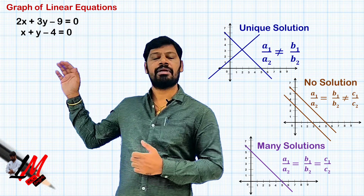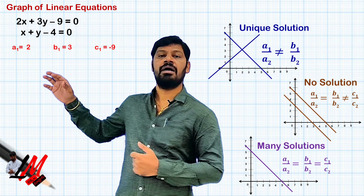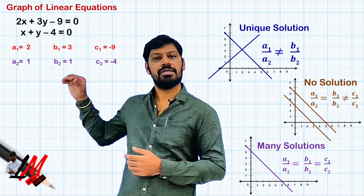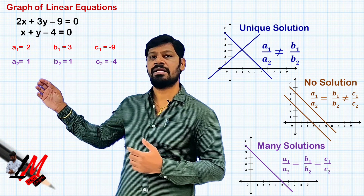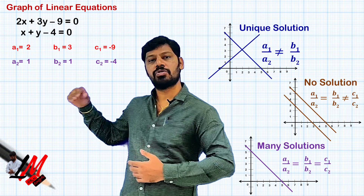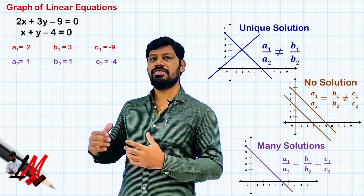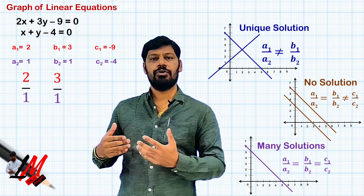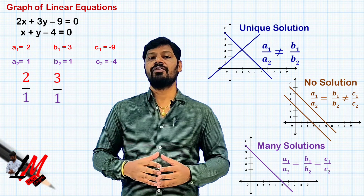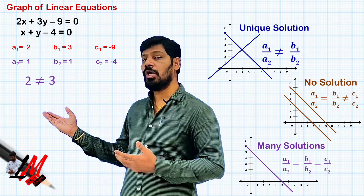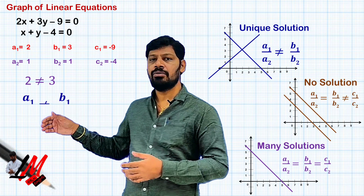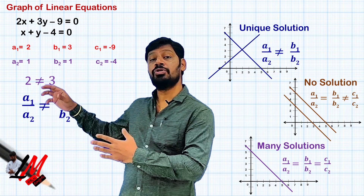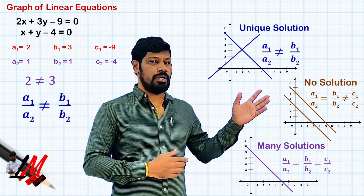Now let me identify the coefficients: a1 = 2, b1 = 3, c1 = −9 for the first equation, and a2 = 1, b2 = 1, c2 = −4 for the second. Checking: a1/a2 = 2/1 and b1/b2 = 3/1. Since 2 ≠ 3, we have a1/a2 ≠ b1/b2, which means this system will give intersecting lines in the graph.